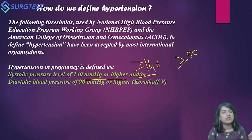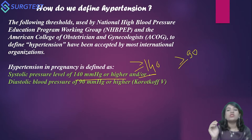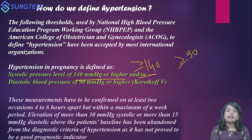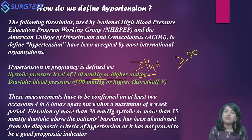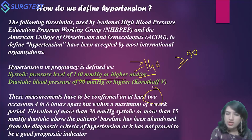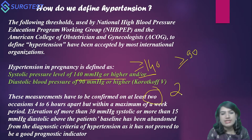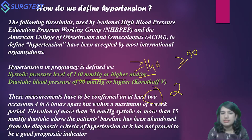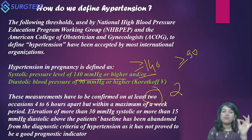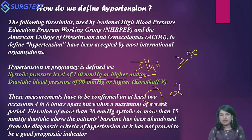The cutoff is systolic equal to or more than 140 and/or diastolic equal to or more than 90, and these measurements have to be confirmed on at least two occasions four to six hours apart. A single reading of, say, 142/86 or 144/96 would not confer hypertension in pregnancy. The two readings should be spaced within a one-week period.